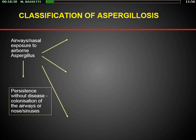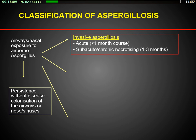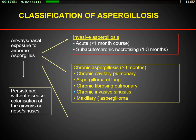We have different forms of aspergillosis. Aspergillus can penetrate through the airways and nasal exposure, and we can have persistence without disease, classified as colonization. Then we can have three different types of disease. The first is invasive aspergillosis, divided into acute — when the course is less than one month — and subacute or chronic, lasting one to three months.